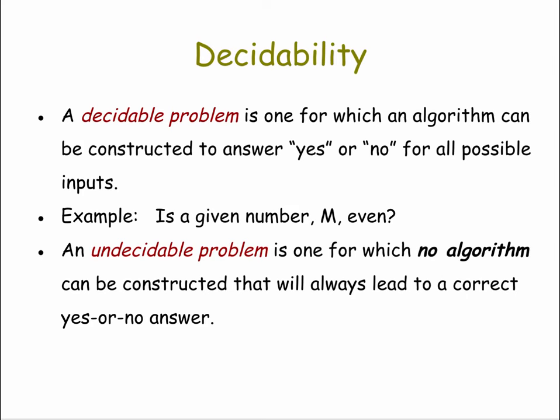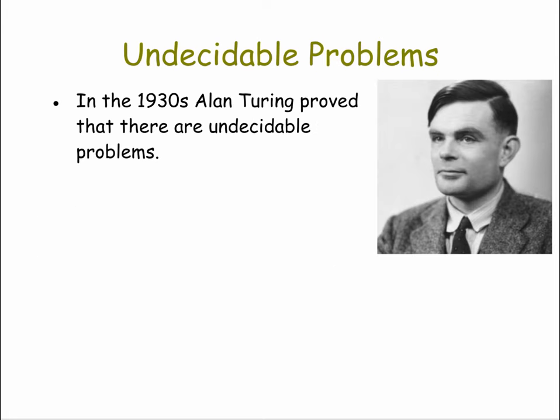An undecidable problem, by contrast, is one for which no algorithm can be constructed that will always lead to a correct yes or no answer. This is a highly theoretical area of computer science research. In the 1930s, Alan Turing — one of the first and most famous computer scientists — proved that there are undecidable problems.